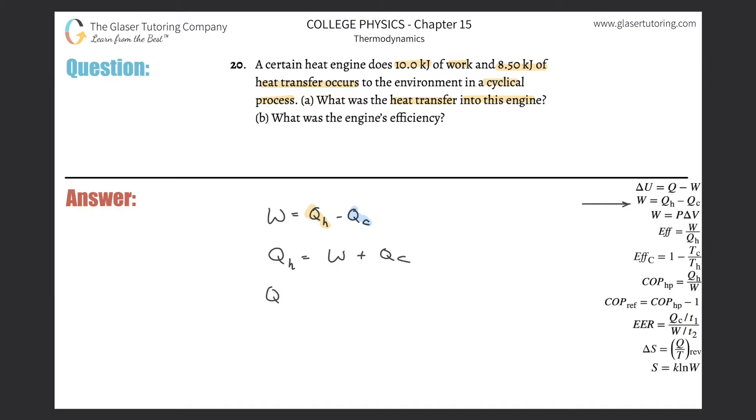And then we just have to now plug in. We're going to use this sign over here, just plugging in the absolute values. So it says the work engine is doing work of 10 kilojoules, and then that engine is also losing 8.5 kilojoules. So the work that the engine does, plus the amount of heat that the engine loses had to come from somewhere, and it came from the hot reservoir.